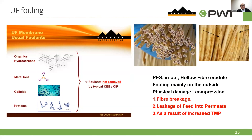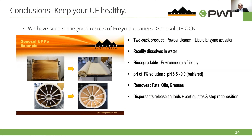Some UF feed water can contain organics that get stuck in the membrane and will not come out with regular CEB or CIP cleaning. This can have very disastrous results. Genesis has a special chemical called Genesol UF, which contains enzymes and can give good results in removing these stubborn organic foulants, as shown here.